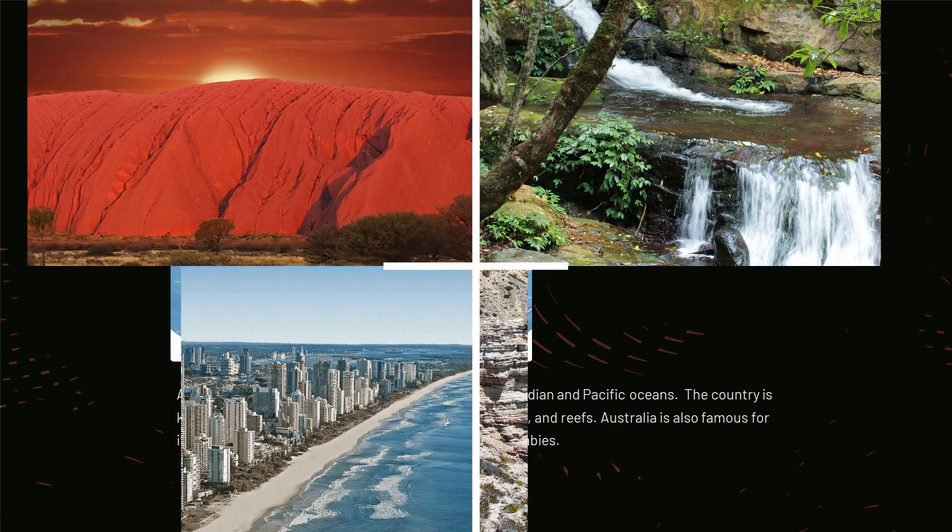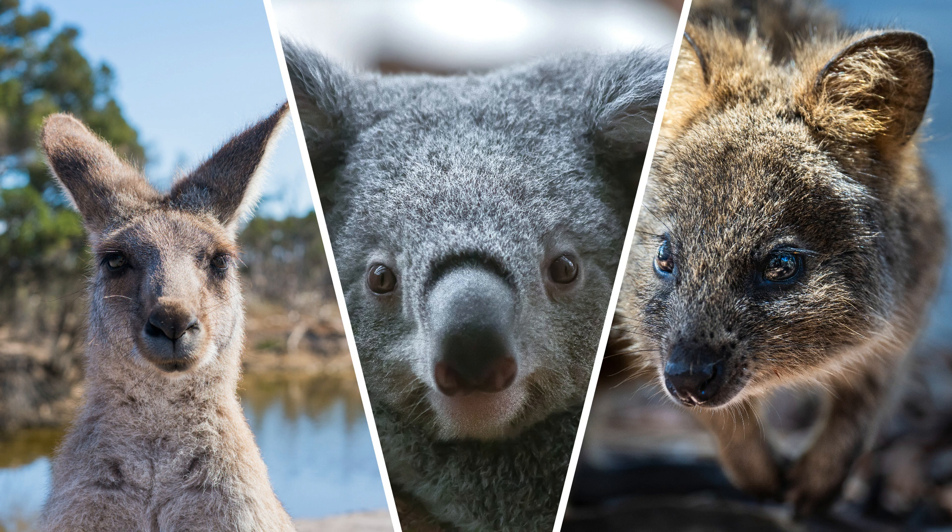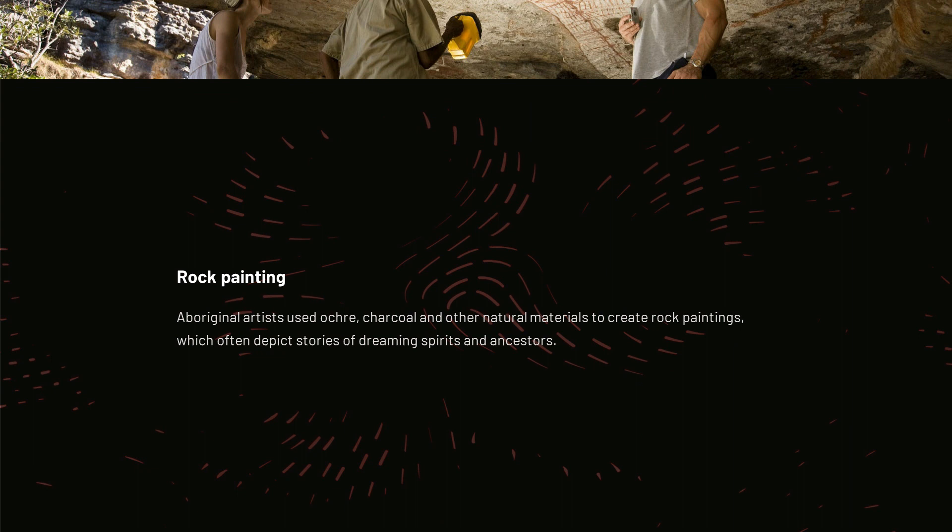Australia is a country and continent surrounded by the Indian and Pacific Oceans. The country is known for its landscapes of mountains, forests, beaches, and reefs. Australia is also famous for its unique wildlife, including kangaroos, koalas, and wallabies.